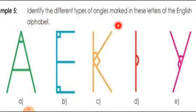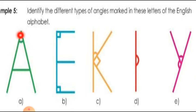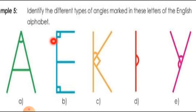Identify the different types of angles marked in these letters of the English alphabet. In this letter A, some angles are marked. The angle in the letter A is an acute angle — it is a very small angle. Now look at the letter E. Here, these lines show a right angle, and here another right angle. So right angles are here in the letter E.